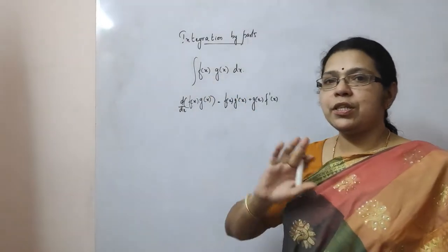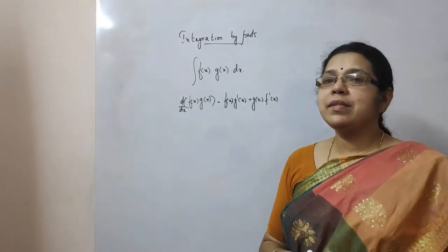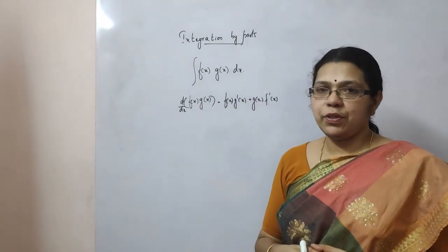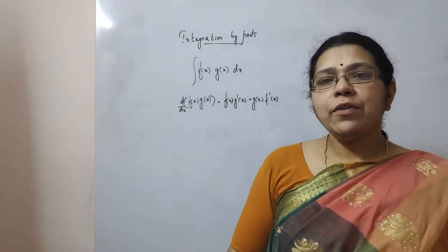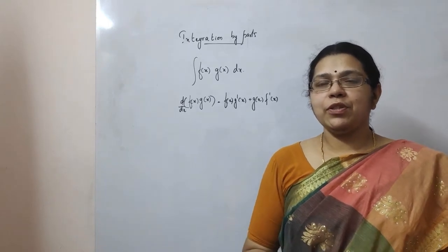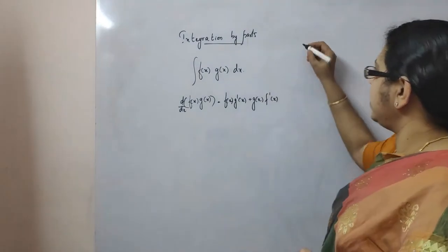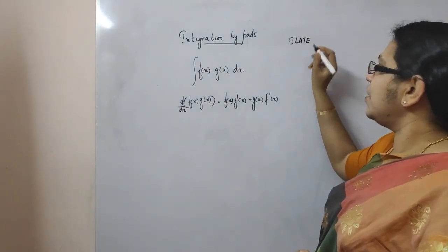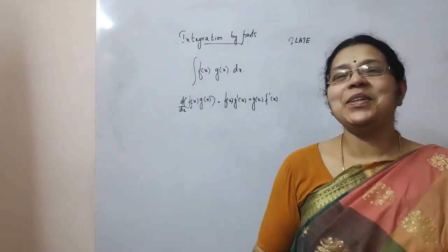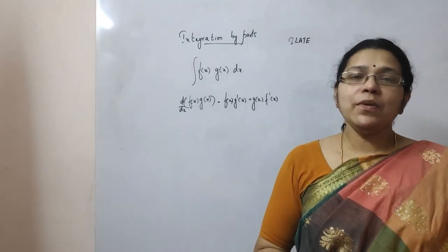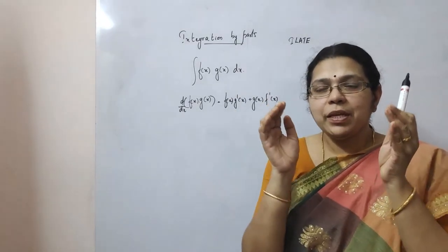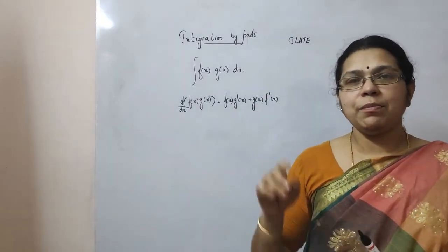In integration there is nothing called a product rule. Instead, we have something known as integration by parts. When we have two functions, we need to decide which is the first function and which is the second. Now what determines the first and second function? We use ILATE. There is nothing called ILATE in your textbook — when you complete your 12th standard and go for higher studies, you will never see ILATE again, because it is only meant for 12th standard students to choose the first and second function.